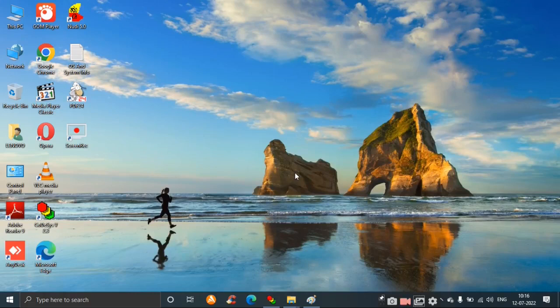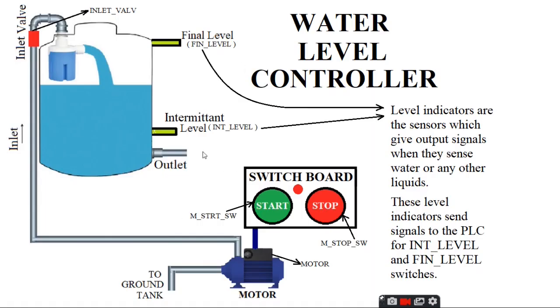In this video we will discuss how to design a ladder diagram for a water level controller system. The system contains a water tank with a final level and an intermittent level, and an outlet with an inlet valve to control the water flow. It has an inlet pipe connected to a motor, and another pipe connected to a ground tank. From the ground tank, we can switch on the motor which will send water to the overhead water tank.